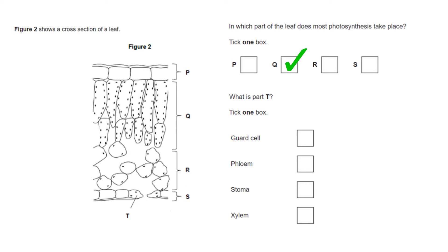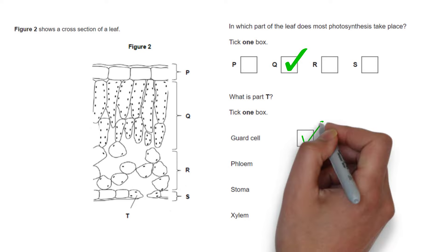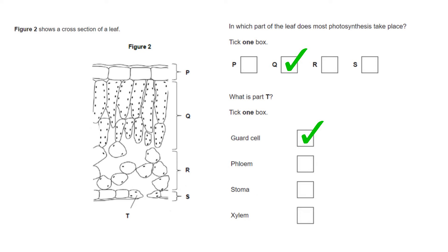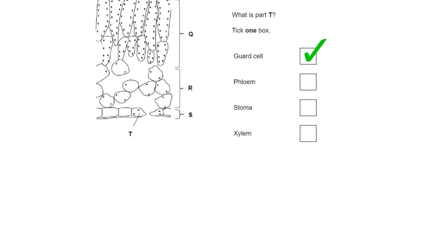Now the next question is asking us what part T is. This is the section of the leaf that opens and closes to allow carbon dioxide to enter. Many students will choose stoma here but in fact one cell is called the guard cell. Two guard cells create the stoma.